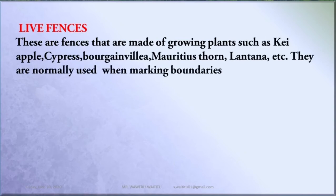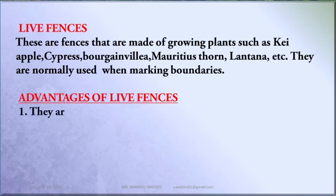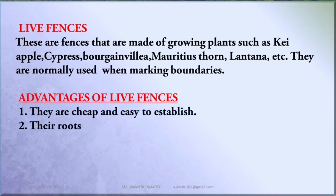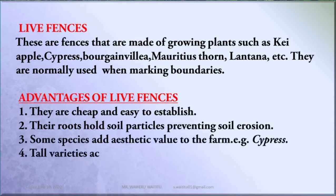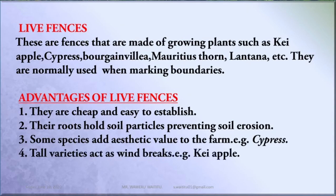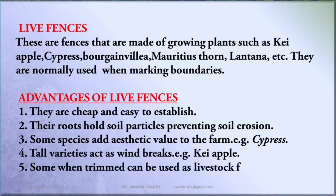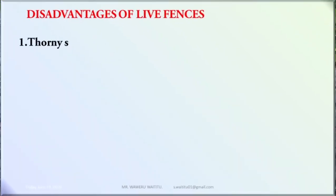The advantages of life fences are: Number one, they are cheap and easy to establish. Number two, their roots hold soil particles, preventing soil erosion. Number three, some species add aesthetic value to the farm — for example, Cypress, Bougainvillea, etc. Number four, some varieties act as windbreaks — for example, Kayeepo. Number five, some when trimmed can be used as livestock feed — for example, Lantana.